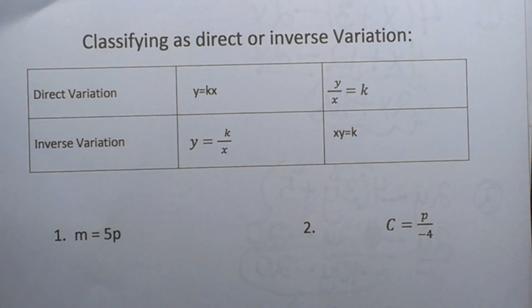So let's first look at the two types of equations. A direct variation equation will take the form y equals kx where x and y are variables and k is a constant.